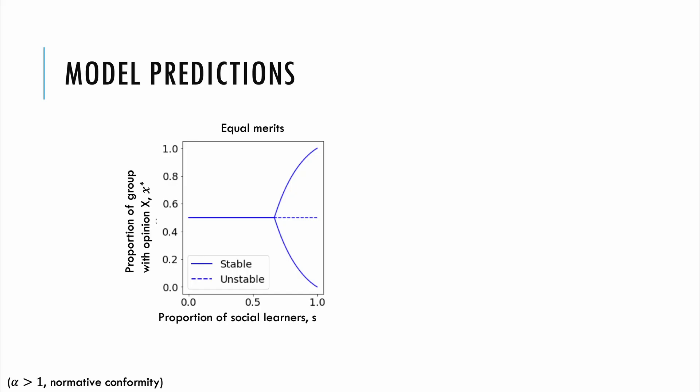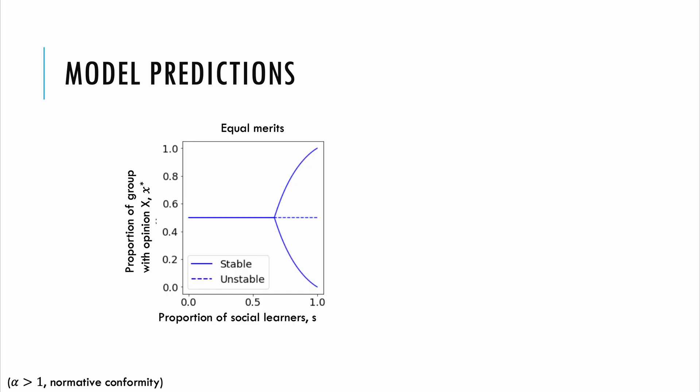The variable we're most interested in is the proportion of individuals favoring option x in the whole group, regardless of whether they are social or individual learners. On this plot, I am showing the proportion of people favoring option x as a function of the proportion of social learners, for the case when options x and y have equal merit. When the proportion of social learners is below a critical threshold, the group is at a 50-50 split, as expected. However, as the proportion of social learners exceeds this critical threshold, the majority will favor either option depending on initial conditions and fluctuations.